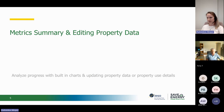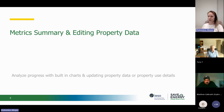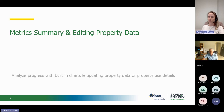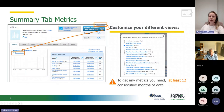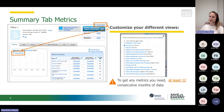Now that you know how to manage and move around Energy Star Portfolio Manager, how do you input metric summaries or build different types of charts? And how do you edit your property data if you've input the wrong kind of properties? Let's go into that in a little more detail.